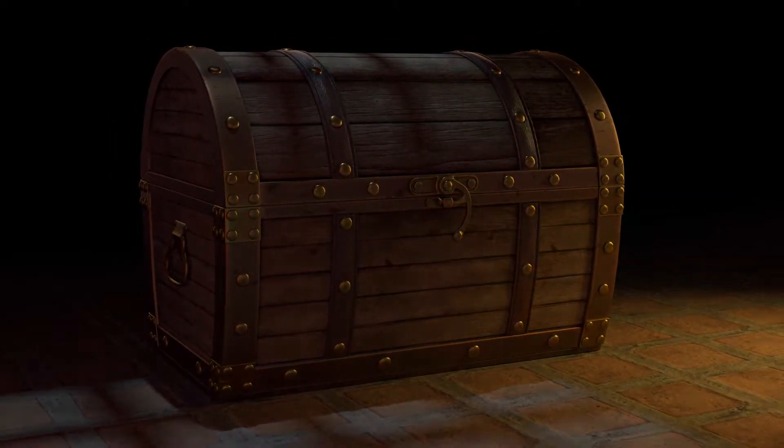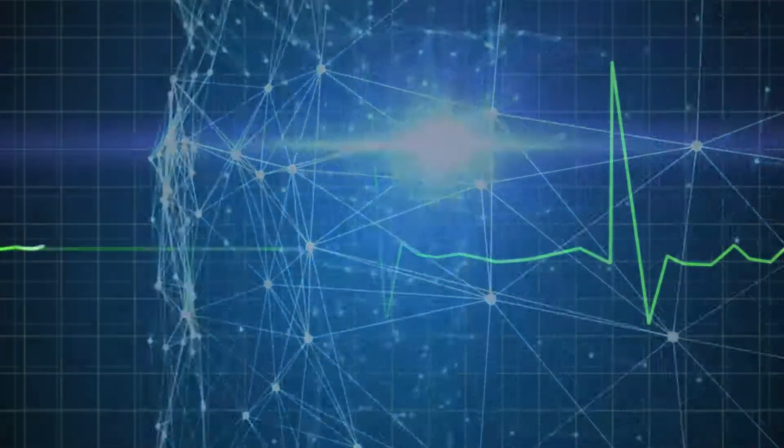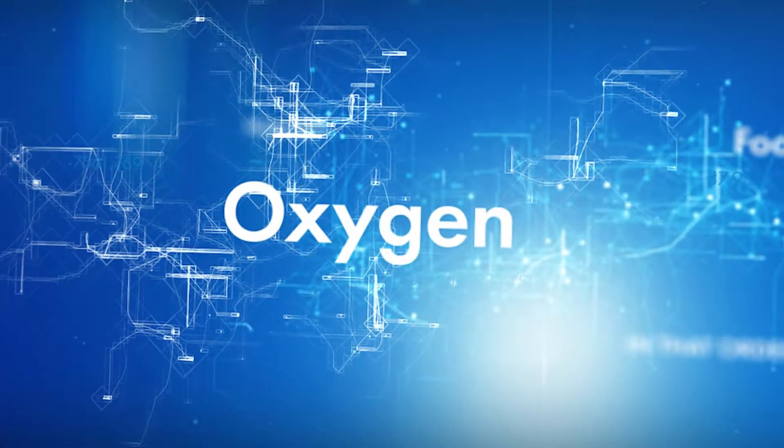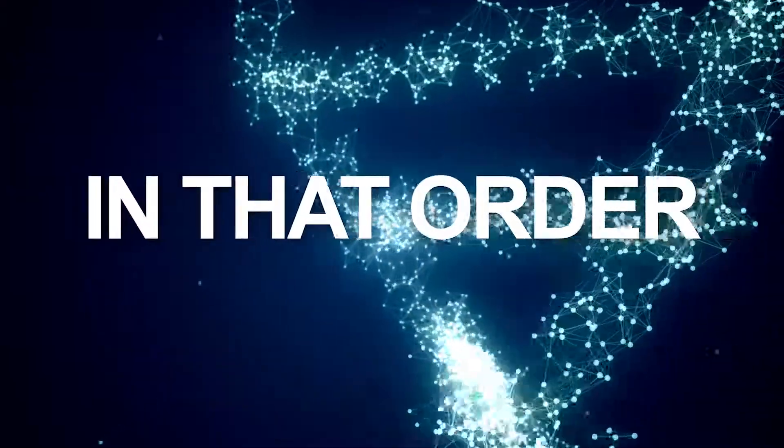Just ask yourself, what's most critical to life if you were suddenly deprived of it? The answer is oxygen, magnetism, water, food, and light, in that order.